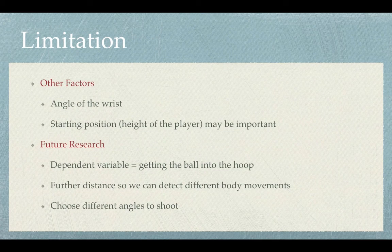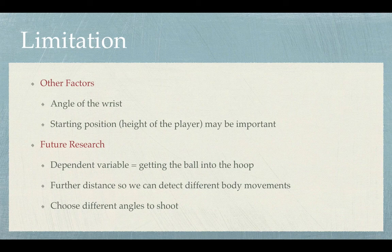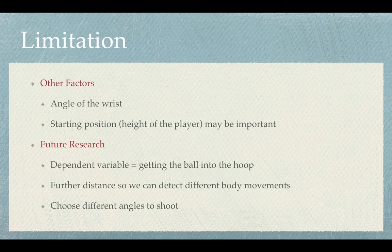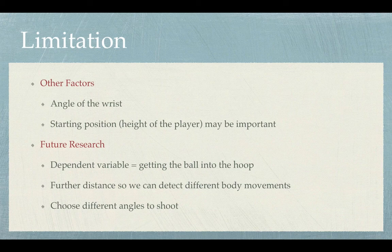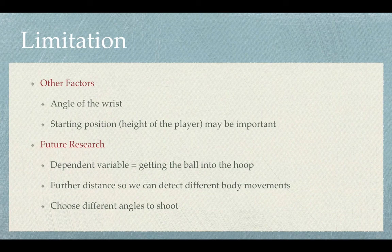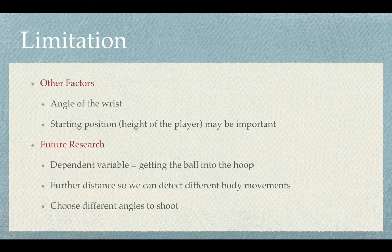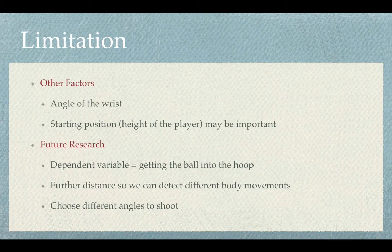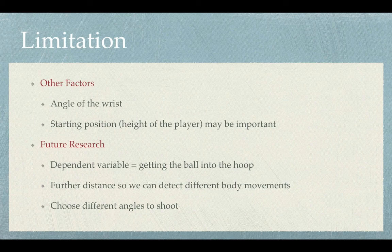For limitations, there are definitely other factors that we wish we could measure during this study. For example, the angle of the wrist that the player shoots, or the starting position because our expert and novice have different heights. For future research, definitely we want to look at how to get the ball into the hoop, not just get into the level of the hoop. Further distance between the players and the hoop, so that we can measure some different body movements. Last but not least, we also want to choose different angles to shoot and see whether or not that makes a difference.